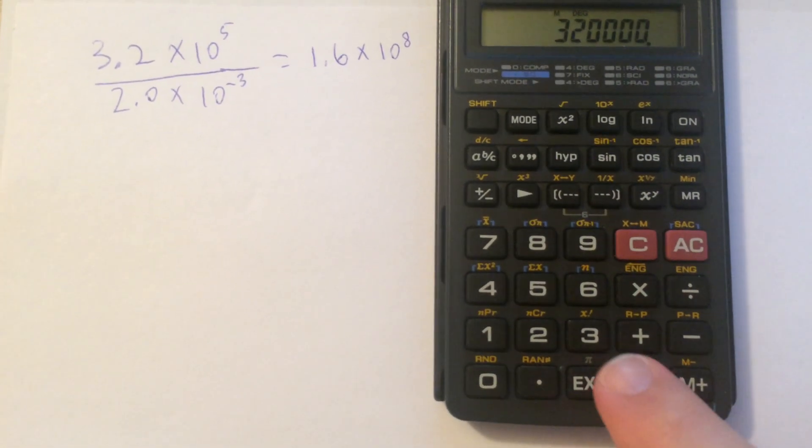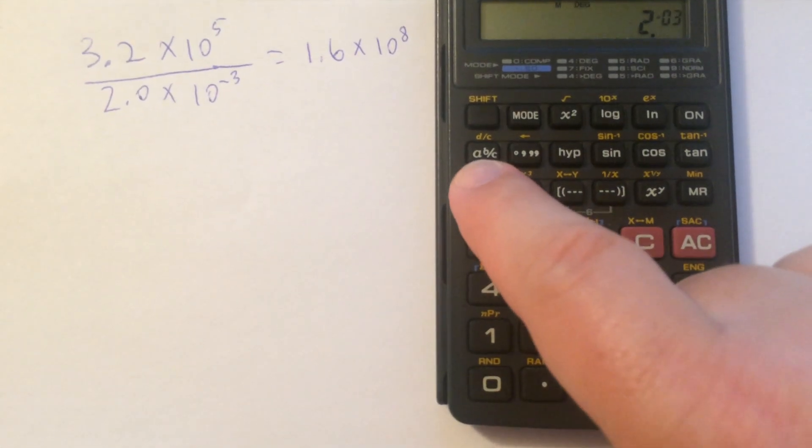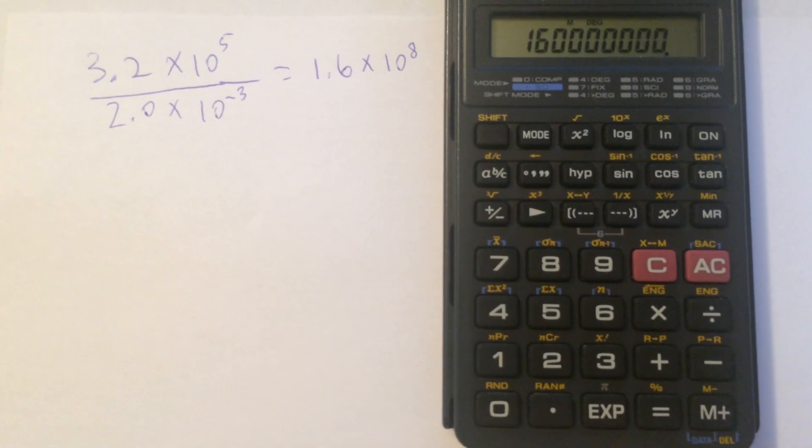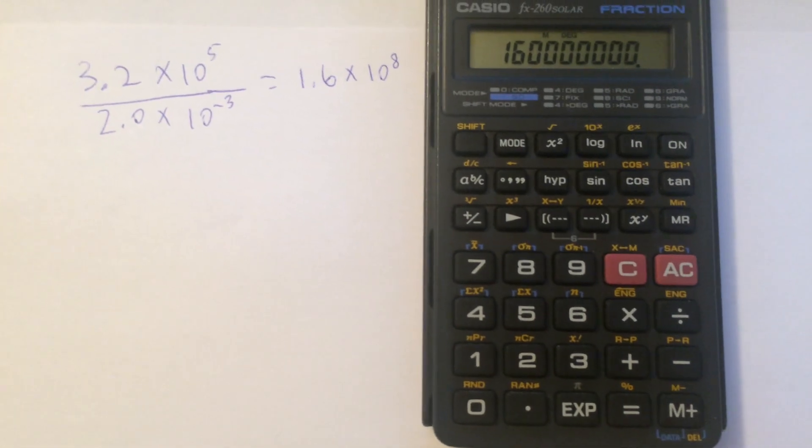And we divide that by 2 EXP 3. And again, we do plus minus there. And that gets us the right answer, but it's clumsy there.